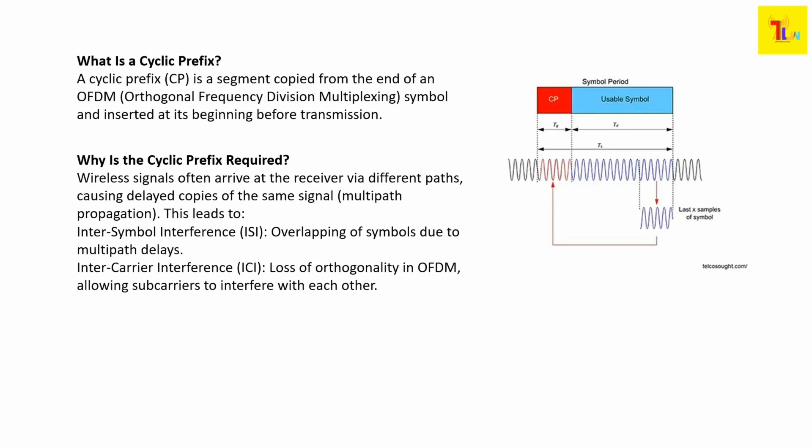So that's some background about cyclic prefix. Now let's talk more about the technical details — how cyclic prefix is implemented in real time. First of all, what is cyclic prefix? A cyclic prefix, or CP for short, is a portion that is copied from the end of an OFDM symbol.